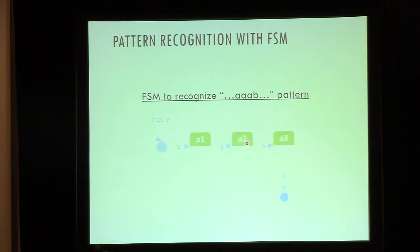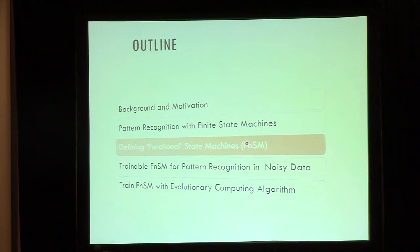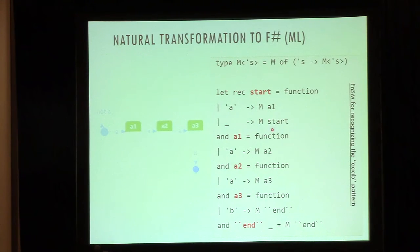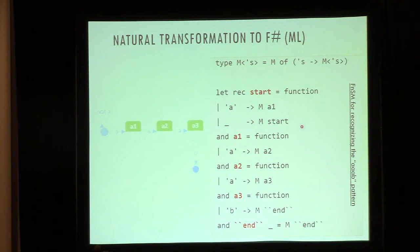Abstracting away error handling, how would you apply that in a streaming fashion? At the core, you'd build something like this. Given that idea, let's talk about functional state machines. The idea is to take a finite state machine and express it using functional code, and the transformation is fairly straightforward. Your states just become functions. Event handling becomes pattern matching. And transitioning just becomes returning a function. This is F-sharp code, but it could be some ML derivative, and I think this concept will work in Haskell as well and many other languages.